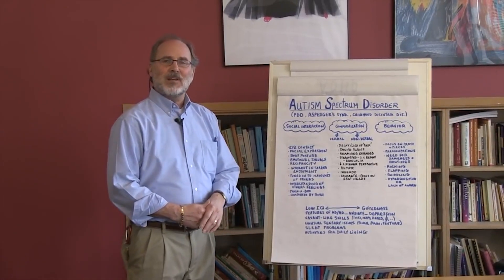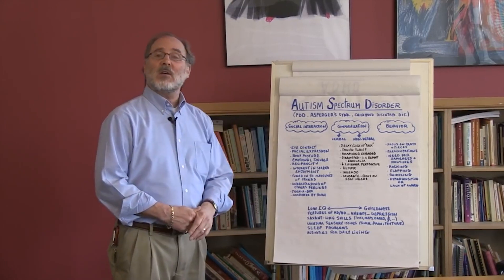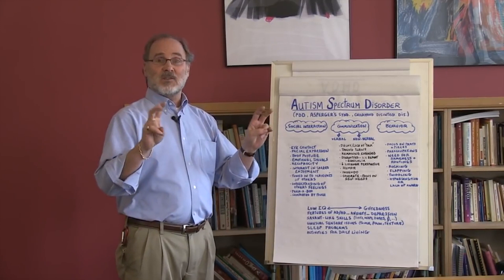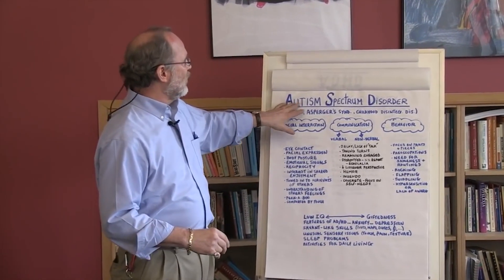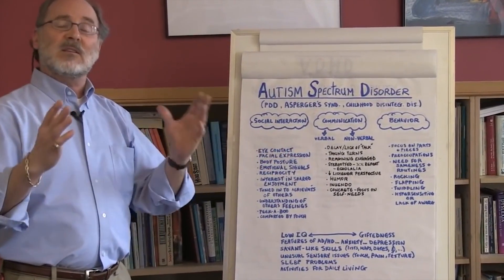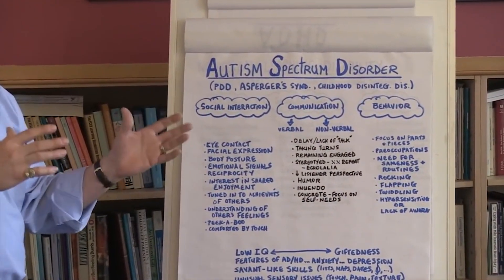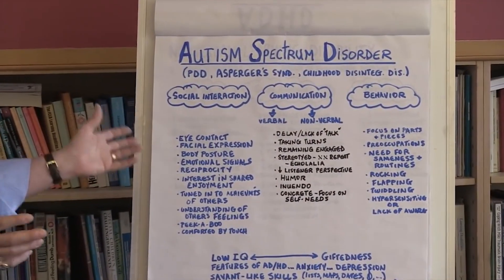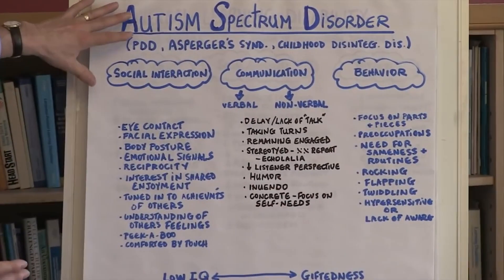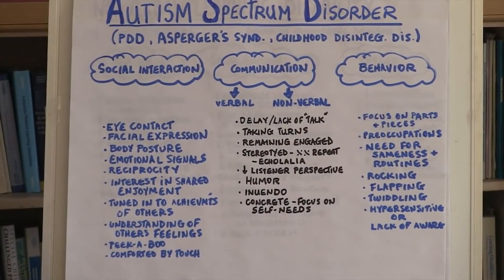Autism Spectrum Disorder. Hi, I'm Dr. Sheldon Horowitz here at the National Center for Learning Disabilities. Today I'd like to talk a little bit about Autism Spectrum Disorder, or Autism. You'll notice that I use the term Autism Spectrum Disorder because it is in fact a spectrum — it isn't a single disorder. Individuals fall on the spectrum in different ways, having different kinds of skills, abilities, and characteristics, but they all share certain things in common.